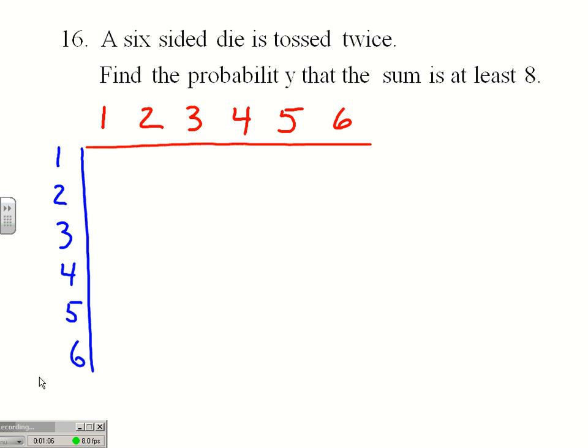And then sometimes within the chart we list them as ordered pairs, but in this case I'm interested in the sum of these two dice. So my sums would be 2, 3, 4, 5, well you build this an awful lot if you're taking probability courses.